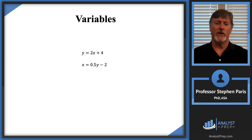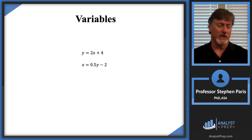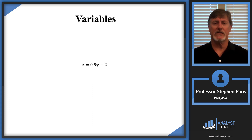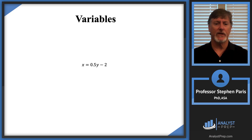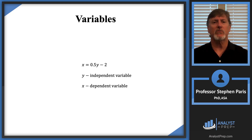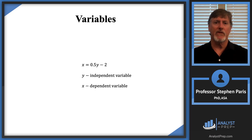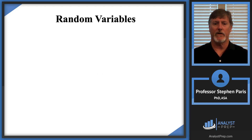Now if I took that first equation and solved for x, I get x equals 0.5y minus 2. Written this way, I'm thinking of y as the independent variable and x as the dependent variable. But again, that's what variables are — they can be a value in any range, a range of values. They're not a specific unknown value, but a range of values.